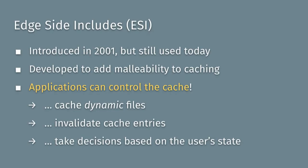Using ESI, you can cache dynamic files, invalidate cache entries, and take decisions based on user state at the cache level. Today we'd call this edge computing — delegating some of the logic and core components of business logic to servers on the edge of your network rather than your application server. That's something we see often these days.